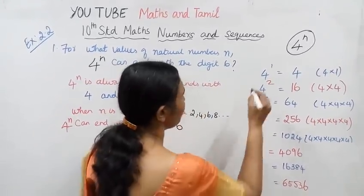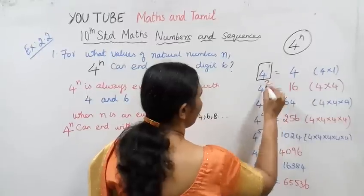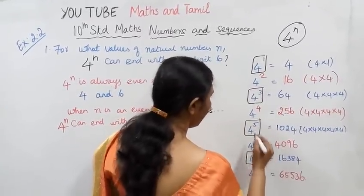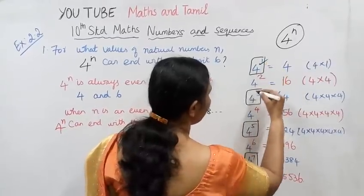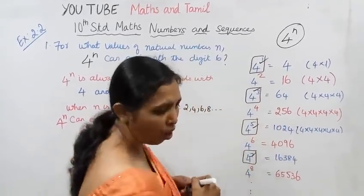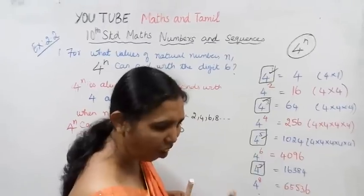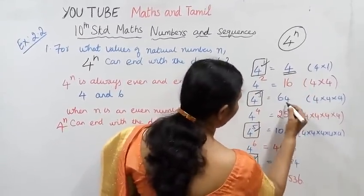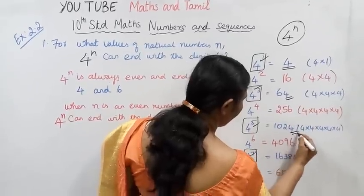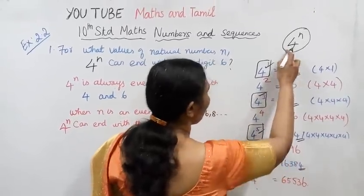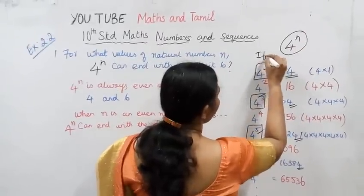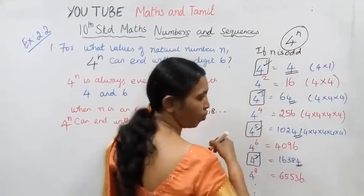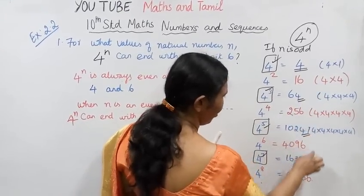Looking at 4 power 1, 3, 5, 7 — the odd powers — the ending number is 4. If n is odd, the ending digit of 4 power n is 4.